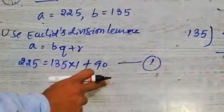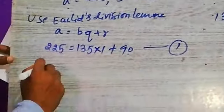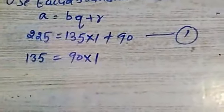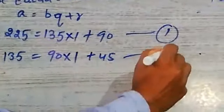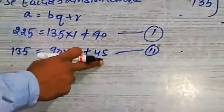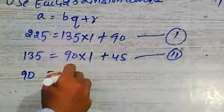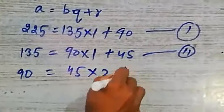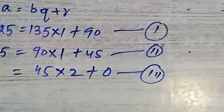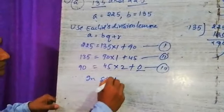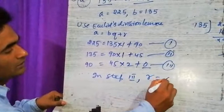In first step, remainder is 90. In the second step, 135 becomes the dividend. The remainder is 45. Now 90 becomes the dividend, 45 is divisor, 2 times the remainder is 0. In third step, the remainder is 0.